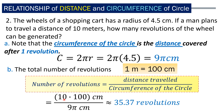Take note: we need to convert 10 meters into centimeters. For each meter, we have 100 centimeters, so 10 times 100 centimeters divided by 9π centimeters gives us approximately 35.37 revolutions. So the wheel should rotate approximately 35.37 revolutions to reach a distance of 10 meters.